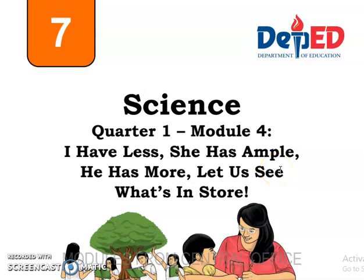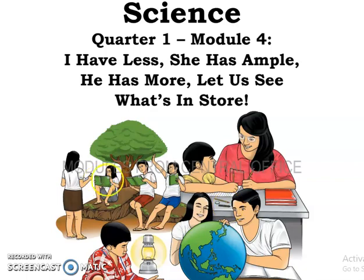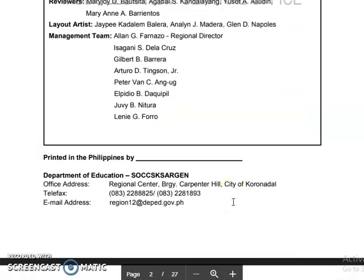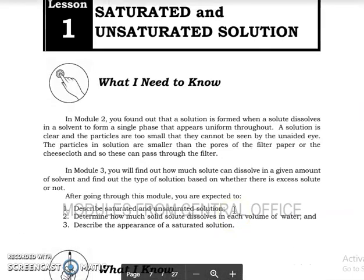Hello everyone, welcome back to a small terrible channel. Let's have a tutorial on this topic. Module 4, I have Lesh. He has ample. He has more. Let's see what's in store. So this is a module coming from the DepEd Central Office, modular or module from Central Office.